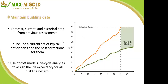Assessment also helps you maintain building data. By forecasting, you can determine current and historical data from previous assessments. It includes a current set of typical deficiencies and best corrections for them. Use cost model lifecycle analysis to assign life expectancy for all systems. Life cycle cost covers installation and commissioning, operation and maintenance, disposal, and decommissioning of an asset.